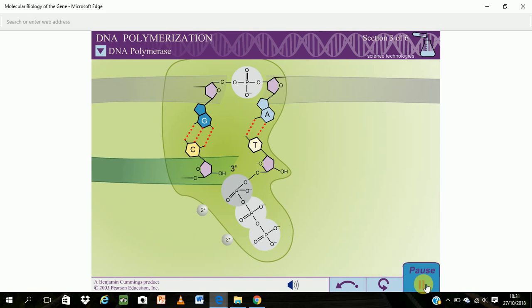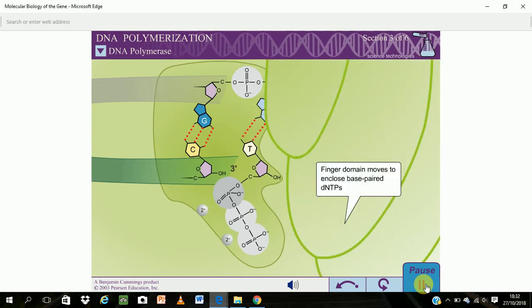Once a correct base pair is formed between the incoming DNTP and the template, the finger domain moves to enclose the DNTP. This conformational change brings the divalent metal ions into the correct positions to function.